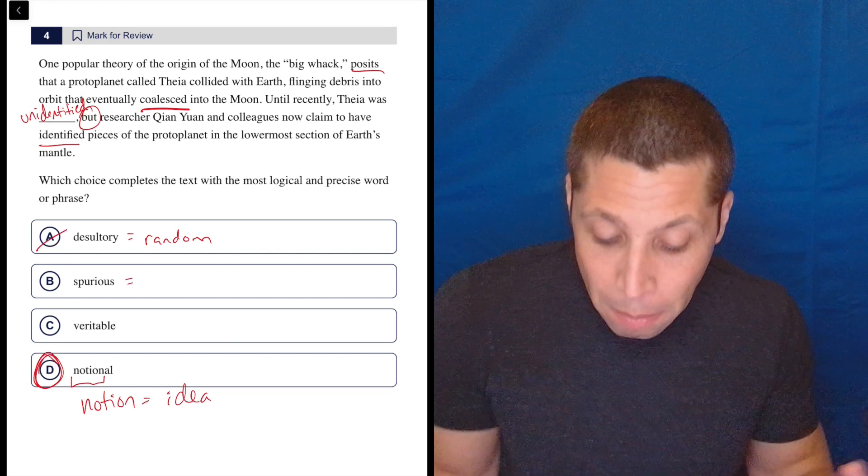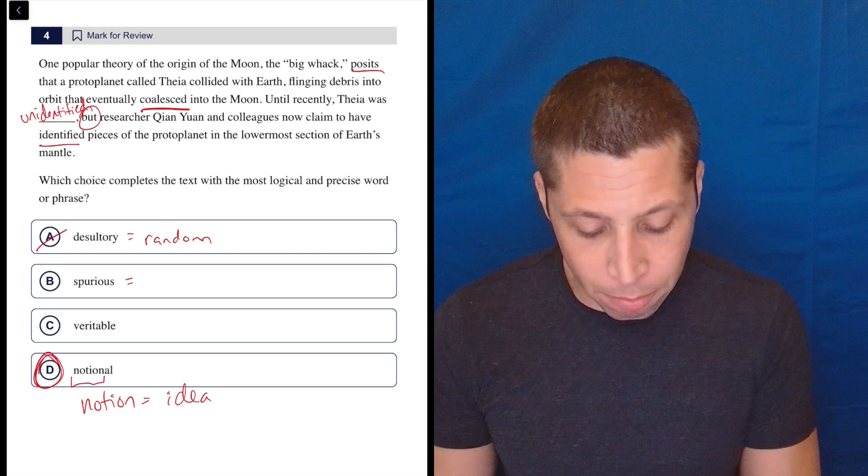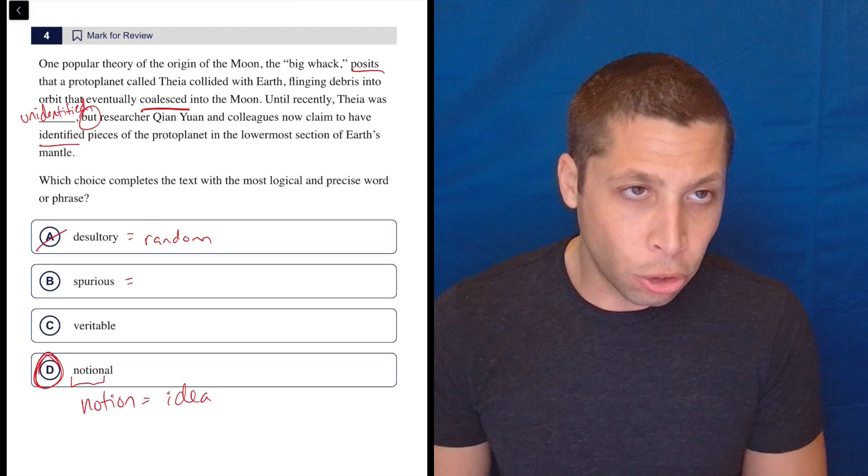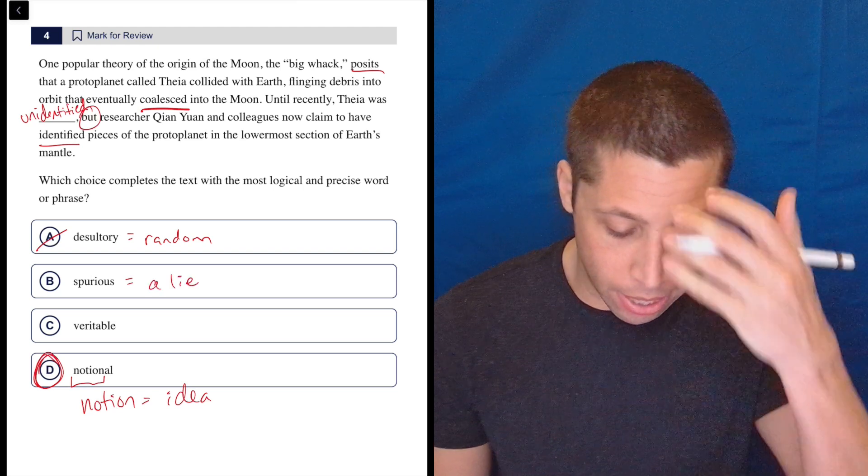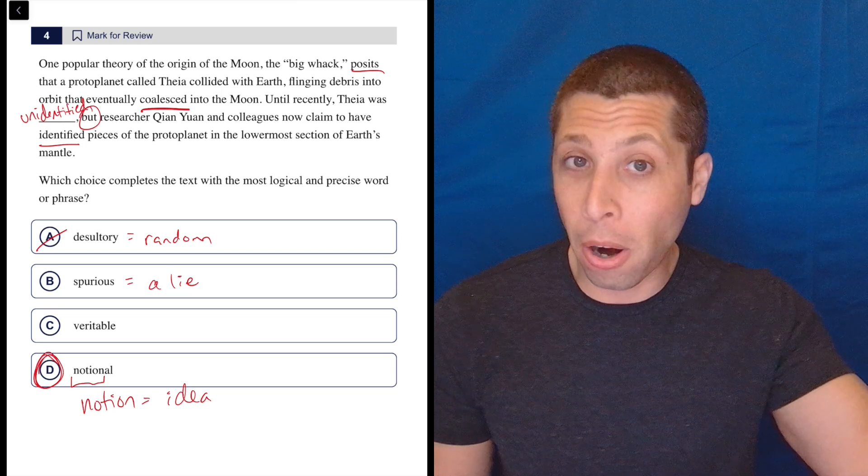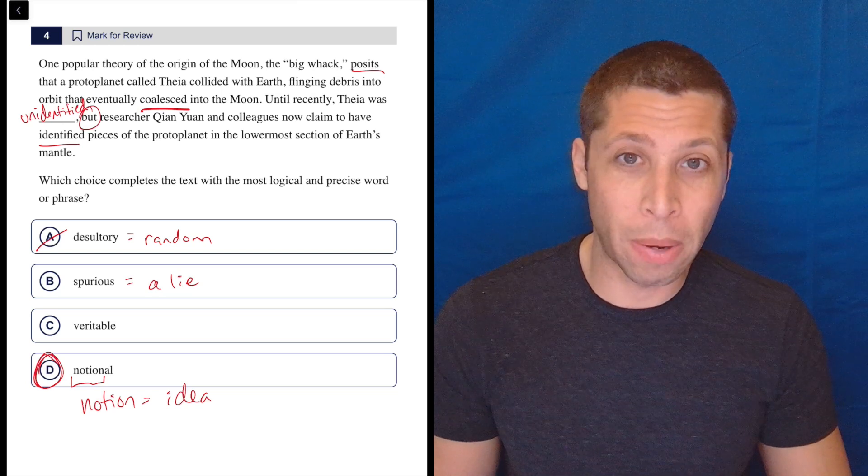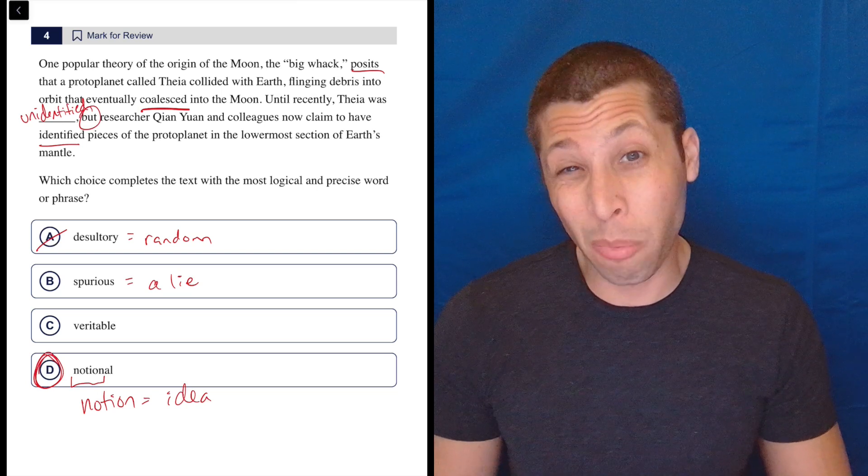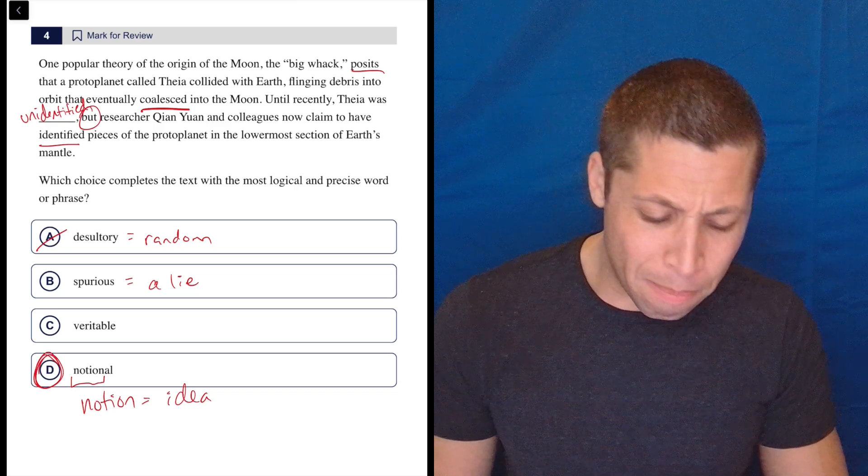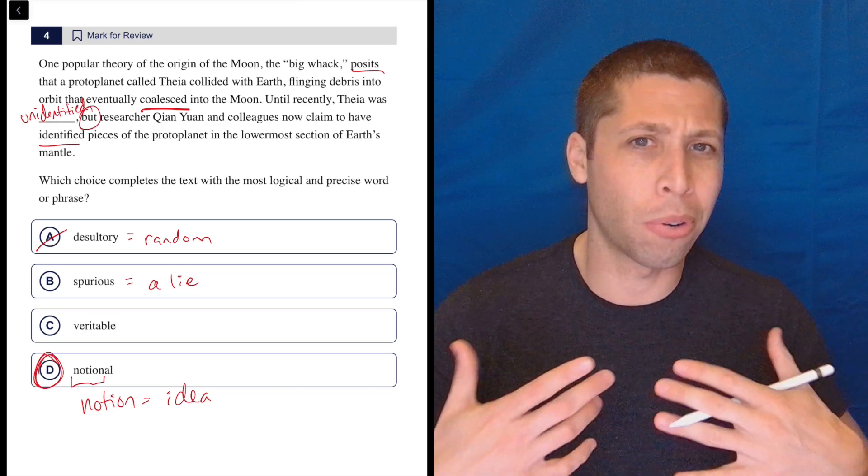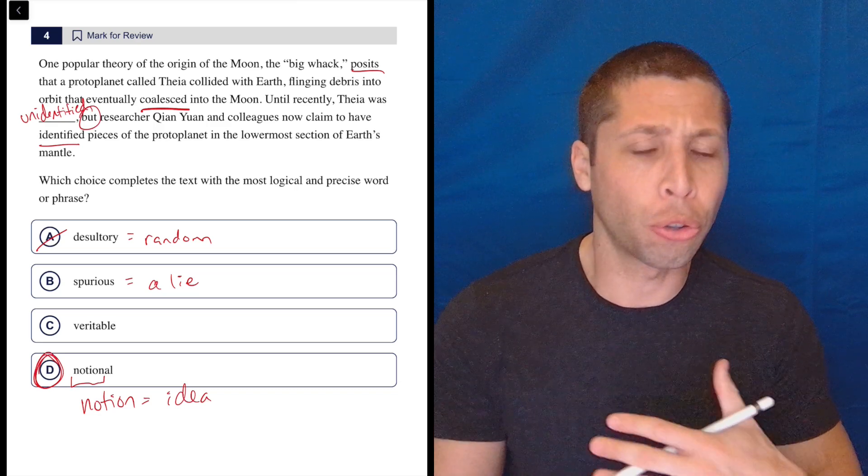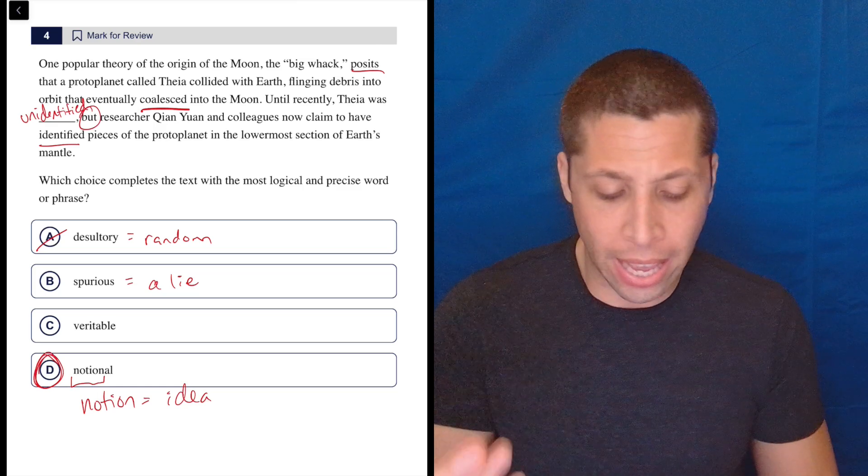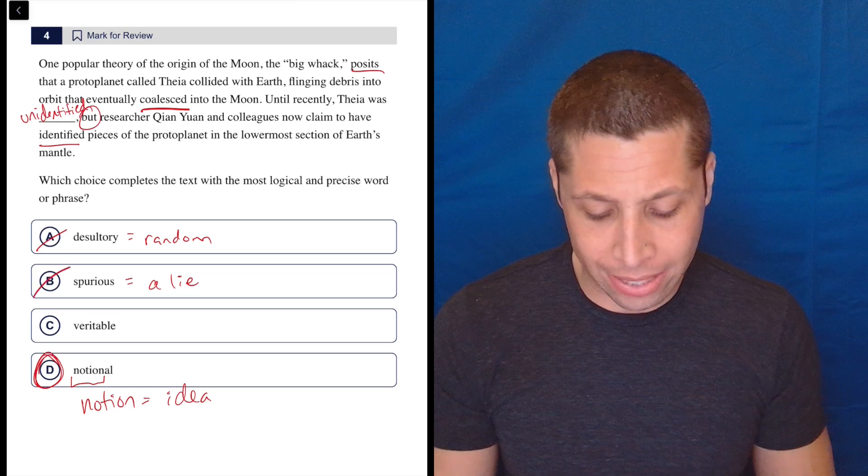Spurious is closer to maybe possibly fitting in the blank. It kind of means like untrue or just like a lie. A spurious remark is kind of where I've heard that before and it just basically means you're making something up about someone usually. So that might suggest that Theia is some sort of thing that people made up and isn't really true. But we don't want to go that far. They're saying they had it as a theory. So that doesn't make any sense.